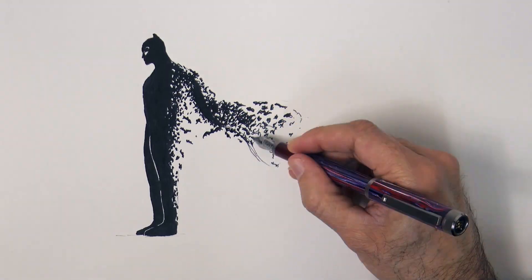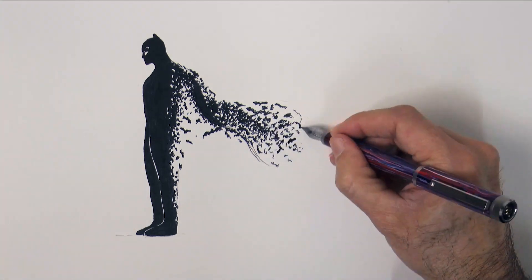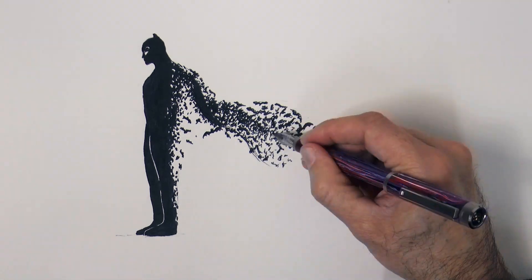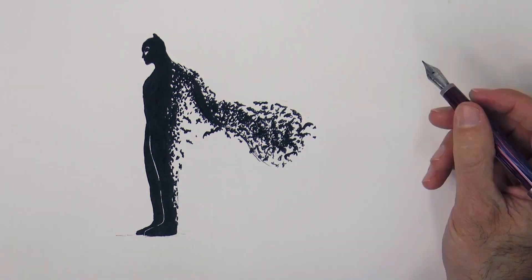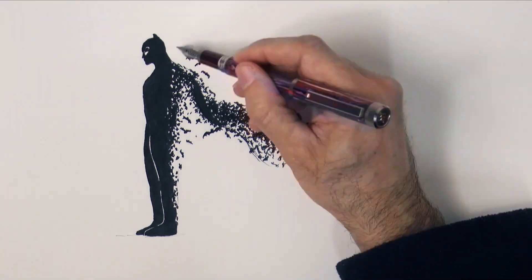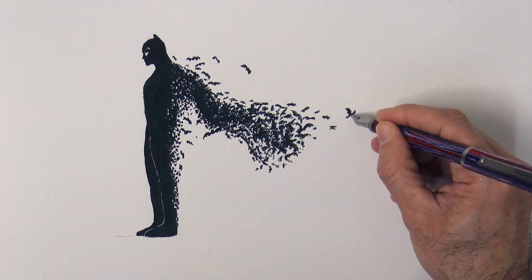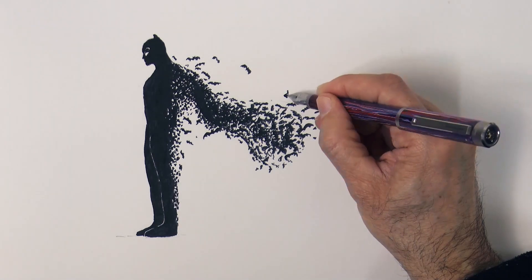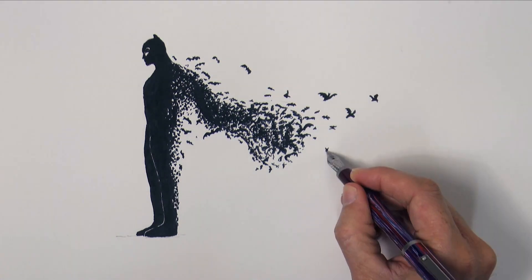And if you don't like Batman so much, you may still use this technique to draw other things, like a girl could be turning into flowers, or a tree into birds, a mermaid into fish, etc.